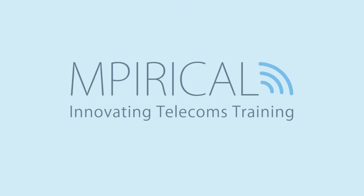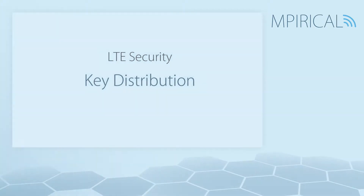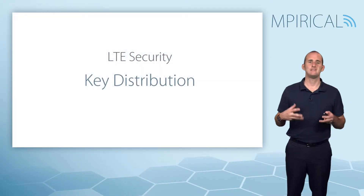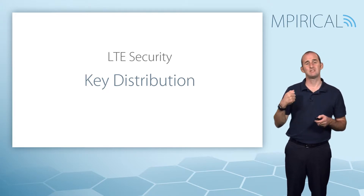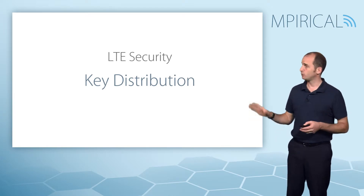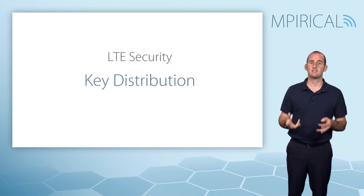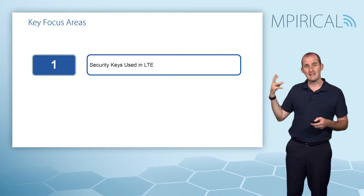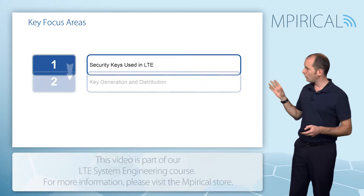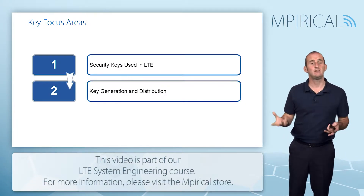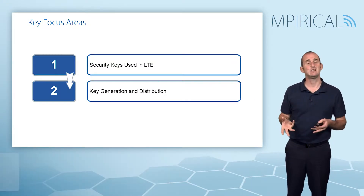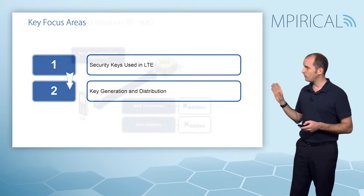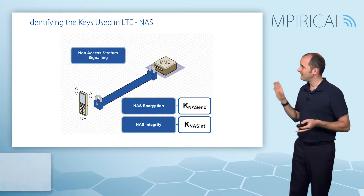In order to support NAS, RRC, and user plane security in LTE, it's important to understand the keys required and how those keys get distributed around the system. In this session we'll identify the different keys required, see how the keys get generated in the first instance, and how they are subsequently distributed through the EPS authentication and key agreement procedure.